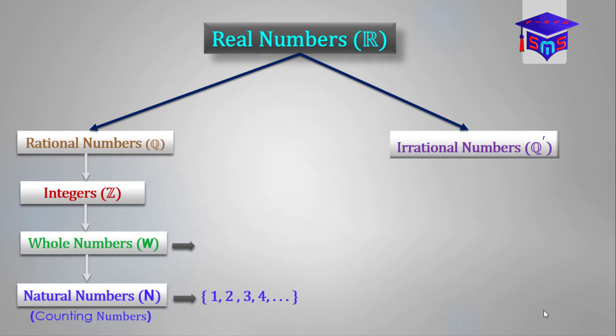Whole numbers on the other side begin from 0 to positive infinity. So the set of whole numbers is a set of natural numbers together with 0. The set of integers begin from negative infinity to positive infinity. Someone can say it's a set of negative and positive whole numbers — that's also correct.